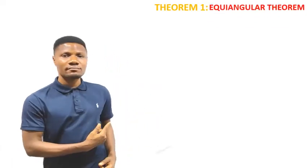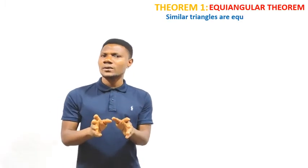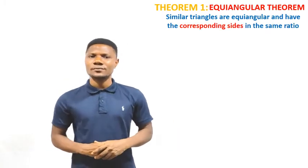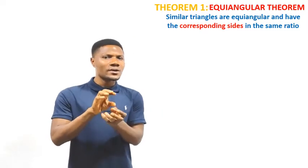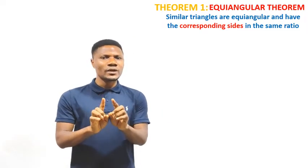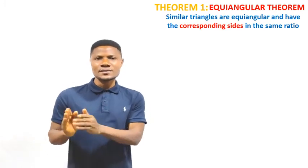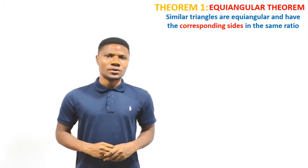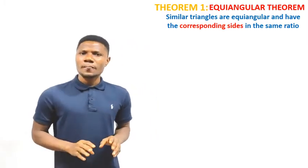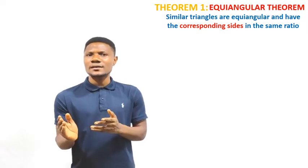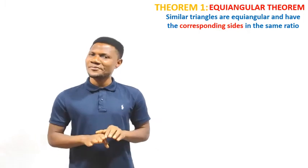Let's consider our first theorem: the equiangular theorem. This theorem says that similar triangles are equiangular and have their corresponding sides in the same ratio. That means the angles are the same and the corresponding sides are in the same ratio. All you need to do is swap the corresponding sides and convert them to a ratio.